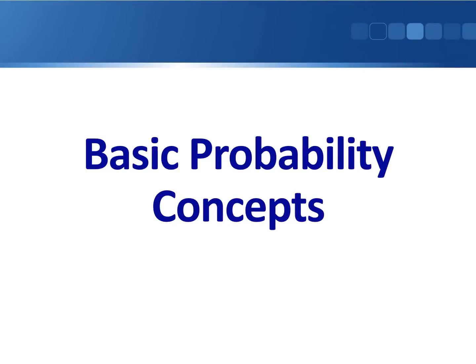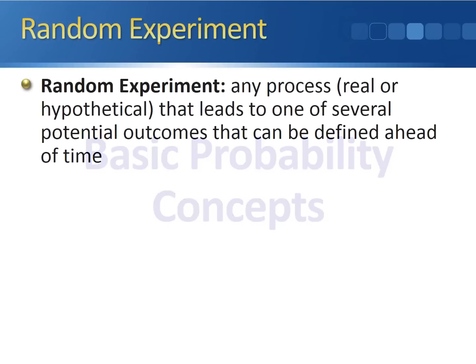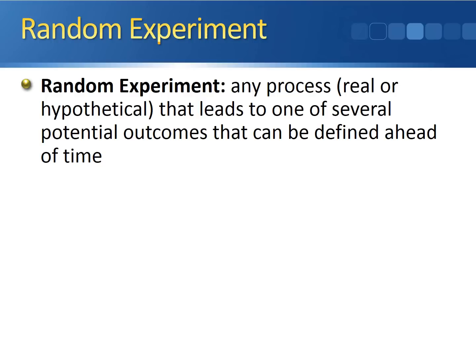We're going to start the probability section of the course next class, so this video is primarily to give you some basic terminology regarding probability that we're going to be using over the next several weeks. To start out, a random experiment is defined to be any process, real or hypothetical, that leads to one of several potential outcomes that can be defined ahead of time.